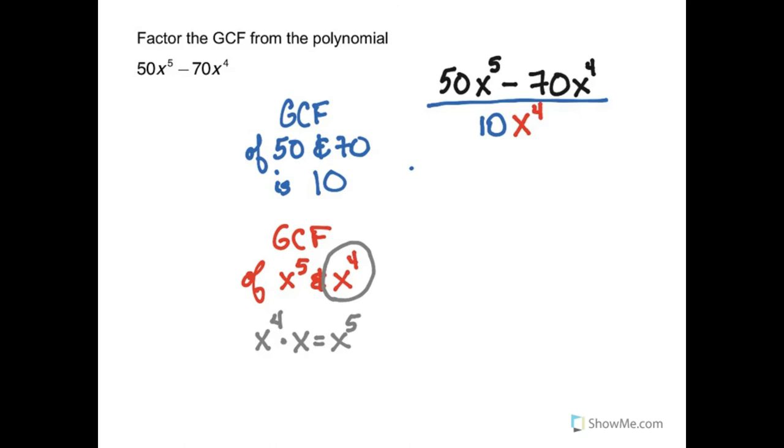And now I'm going to divide each of the terms in the numerator is divided by the denominator. So I'm doing 50 x fifth divided by 10 x fourth. That gives me 5x. And I'm doing minus 70 x fourth divided by 10 x fourth. And that's giving me negative 7.